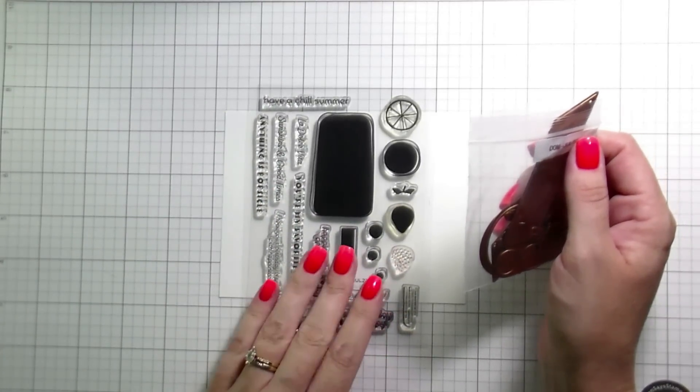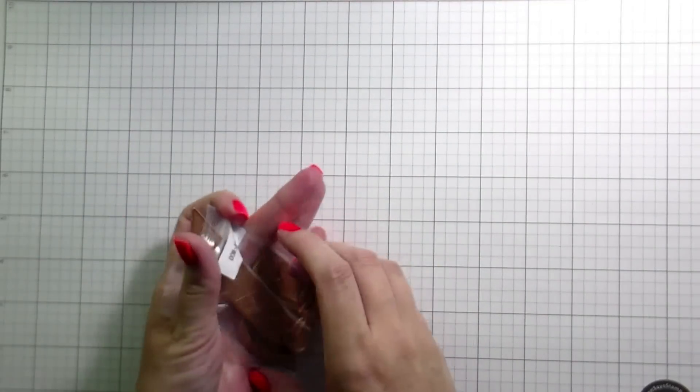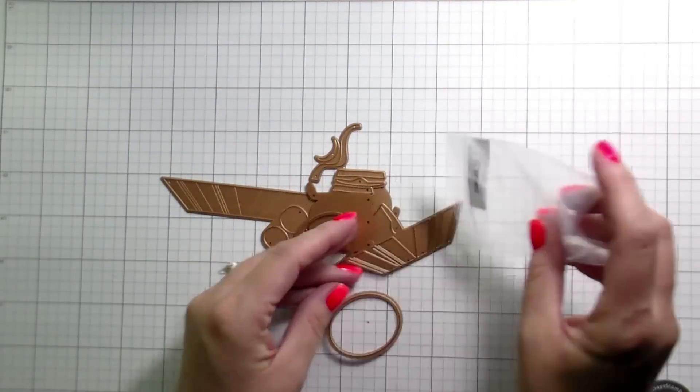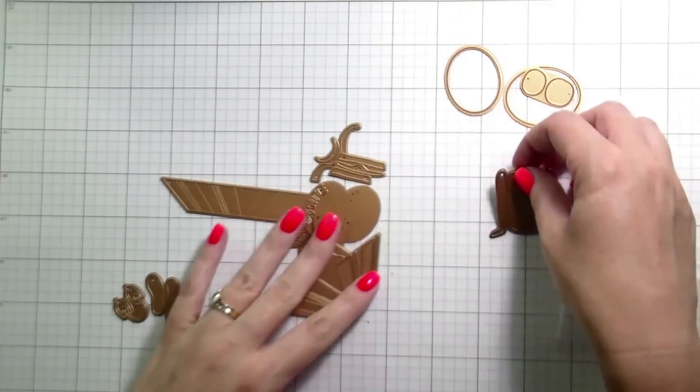I'm using a sentiment from the Clear Stamps and Dies Kit. You may have seen that I made a video with those earlier in the month with the little popsicles. I will link to that if you're interested in seeing.